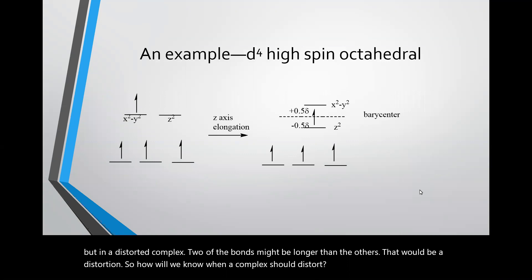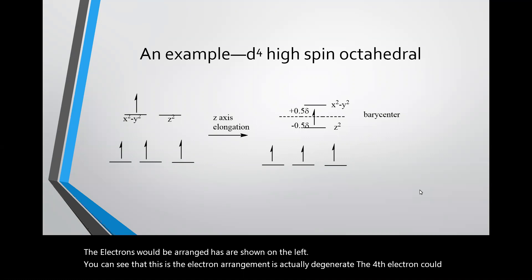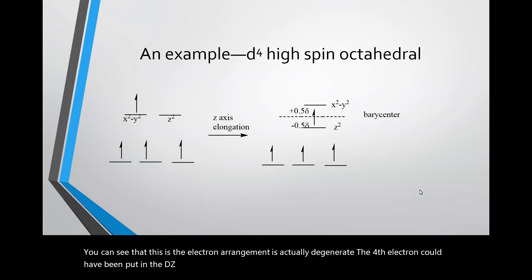Well let's look at one example where there is a distortion. Imagine that we had a high spin d4 octahedral complex. The electrons would be arranged as are shown on the left. You can see that this electron arrangement is actually degenerate. The fourth electron could have been put in the dz² orbital just as easily as the dx²-y². Therefore it is in an electronically degenerate ground state.